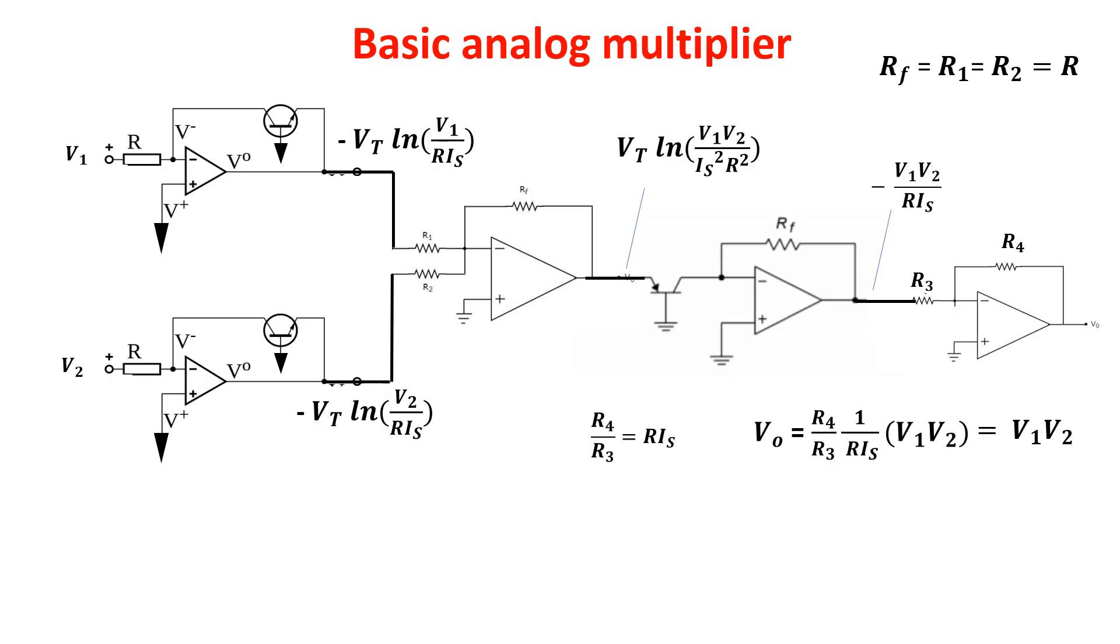Moreover, we made some approximations for the collector current of the BJT, for example. So, this circuit is just to give a glimpse on the working of analog logarithmic operations.